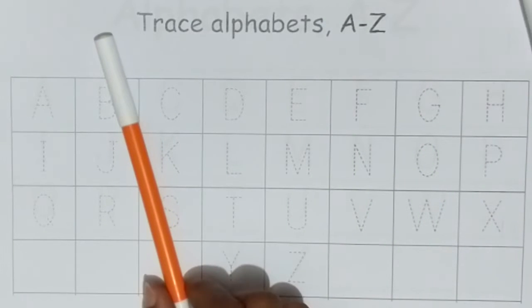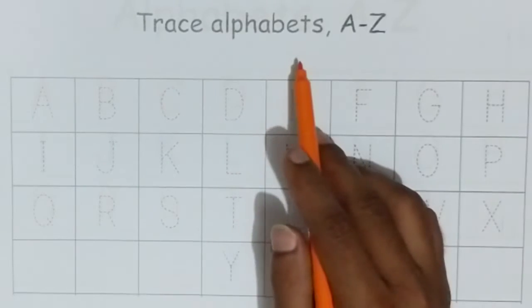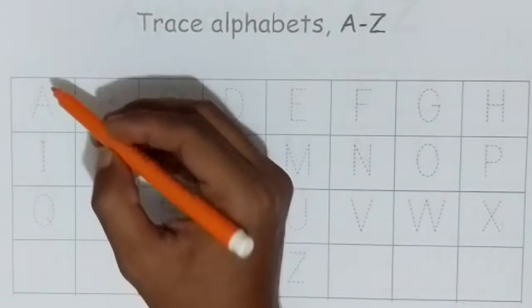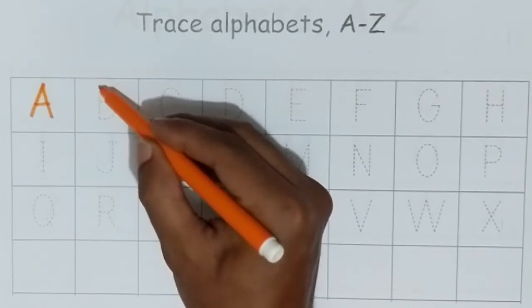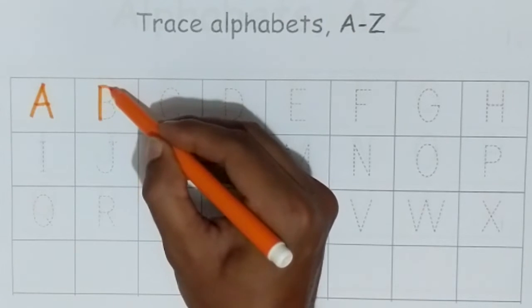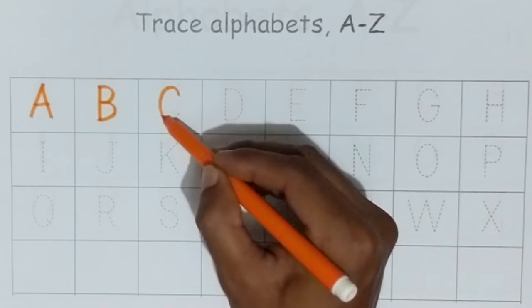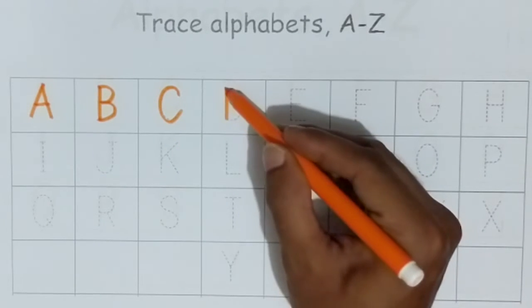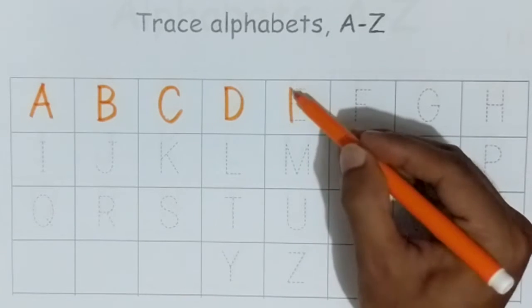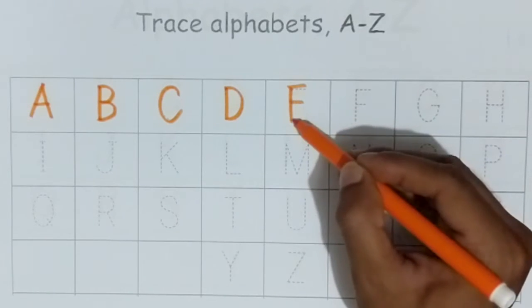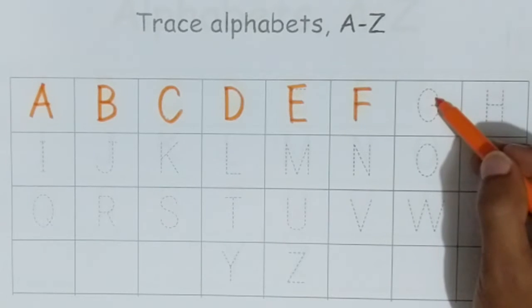Green color, orange color. Trace alphabets A to Z. A, B, C, D, E, F, G.